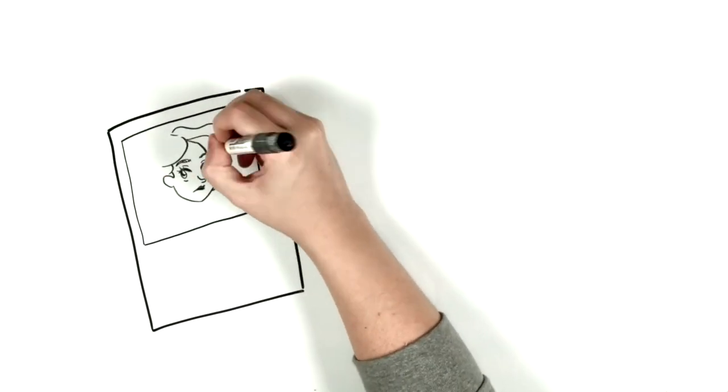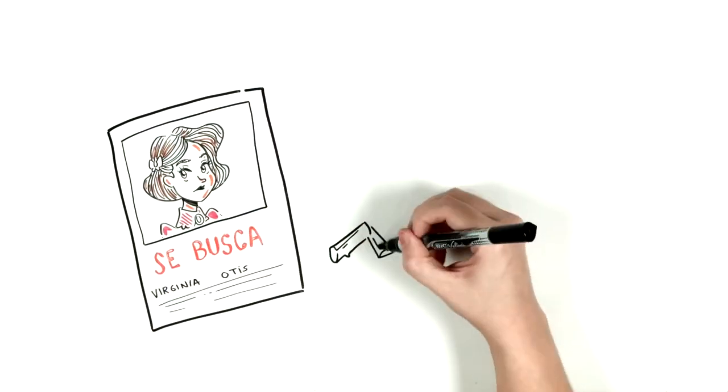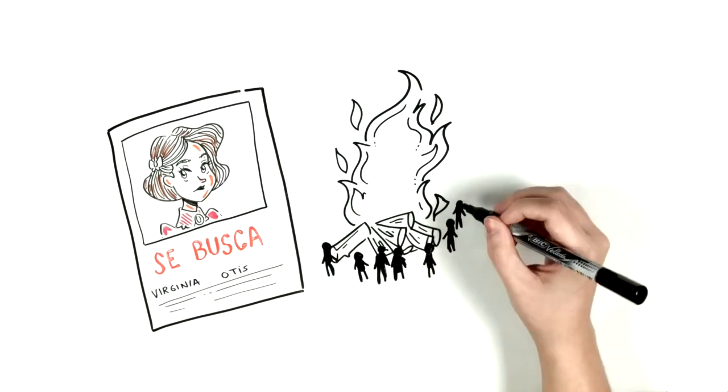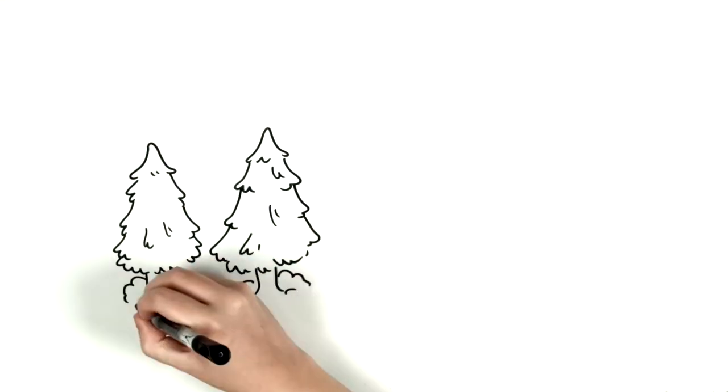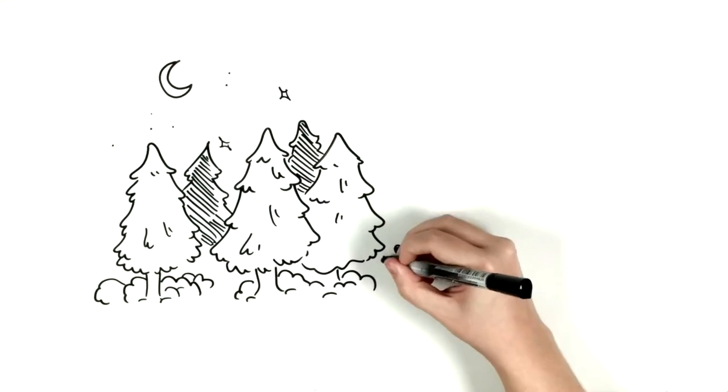The Otis family was alarmed to find Virginia nowhere, and they suspected that the group of gypsies camping near the house were the culprits. The Otises and the Duke came out for them, but the gypsies knew nothing of Virginia. They were still willing to help them find her.